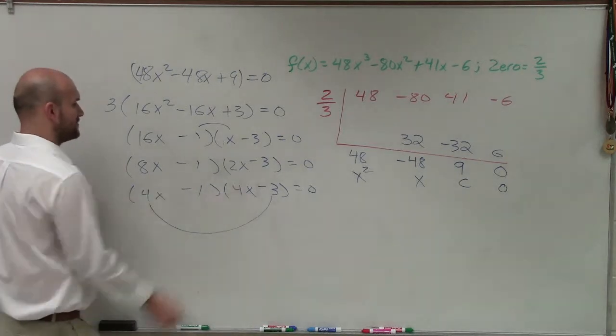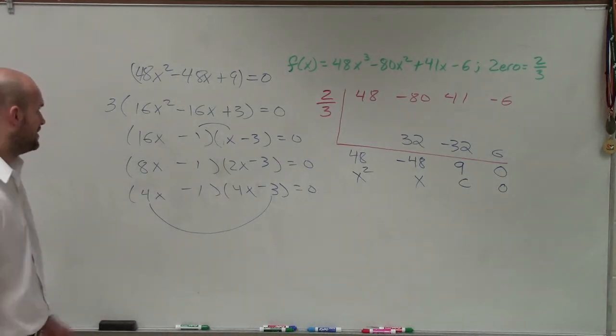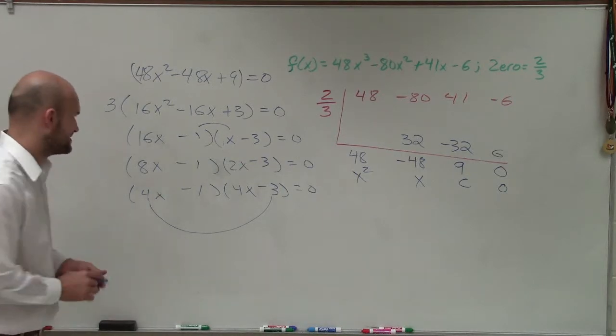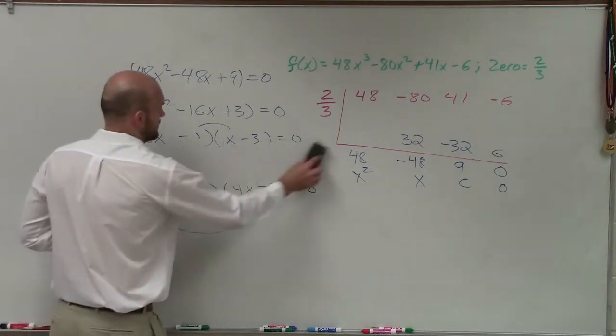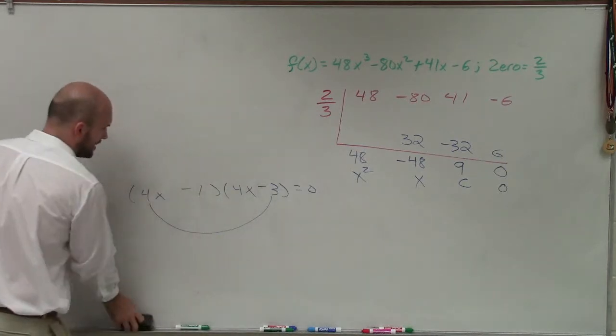4x times negative 3 is a negative 12, and then 4x times negative 1, that gives me a negative 4, which gives me negative 16. So guess what? I figured it out.